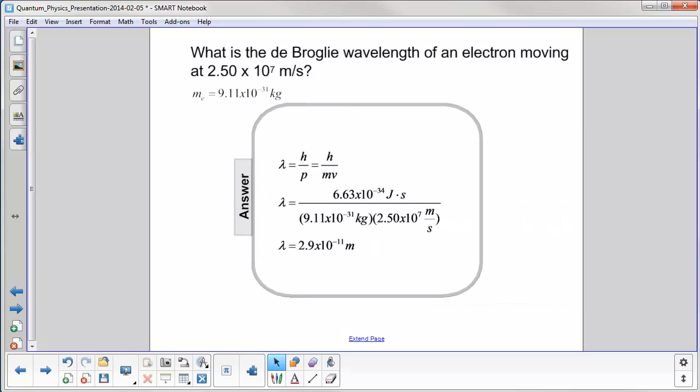We have the de Broglie wavelength equation, h over p. Planck's constant over momentum, which is mass times velocity. We substitute in the numbers here.